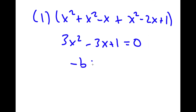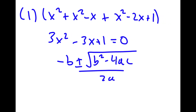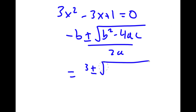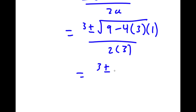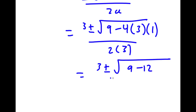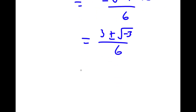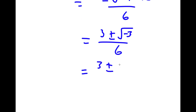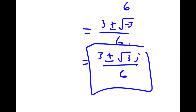To solve this, we can use the quadratic formula: negative b plus or minus the square root of b squared minus 4ac, over 2a. That gives us 3 plus or minus the square root of negative 3 squared minus 4 times 3 times 1, all over 2 times 3, which simplifies to 3 plus or minus the square root of negative 3, over 6, which equals 3 plus or minus i times the square root of 3, over 6. So these are the two solutions.